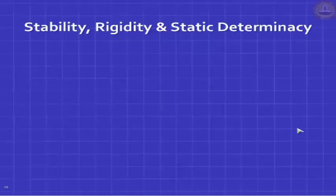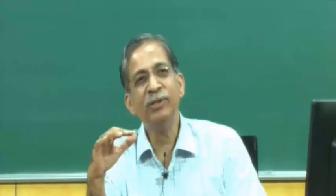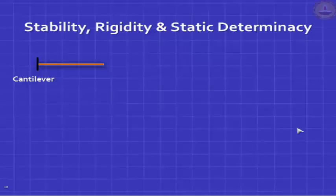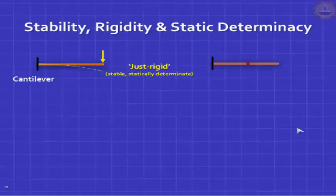Next topic: a brief overview of stability, rigidity, and static indeterminacy. A cantilever beam is stable — as a rigid body it cannot move; it is fixed at the left end against rotation and translation. Simply supported beams are also stable. These beams are said to be just rigid — we gave them the minimum rigidity needed for stability. These are said to be statically determinate. If I put a load, the beam resists it by a change in curvature.